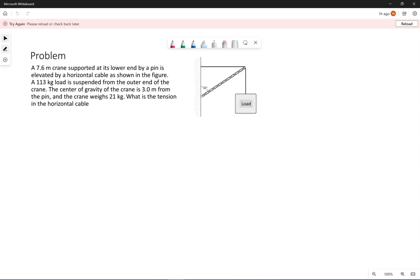Here's another example of equilibrium. So we have our crane. We're told this is 7.6 meters long. It's supported at its lower end down here by a pin.